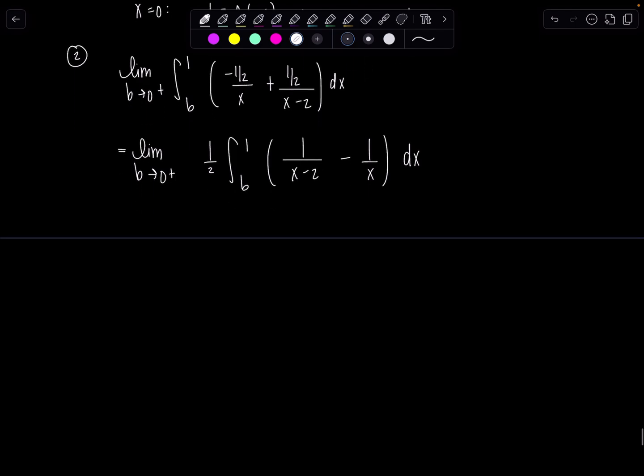And then both of these antiderivatives, it's just going to be ln absolute value of the denominator. So we have ln absolute value x minus two minus ln absolute value of x, and then this gets evaluated from b to one.